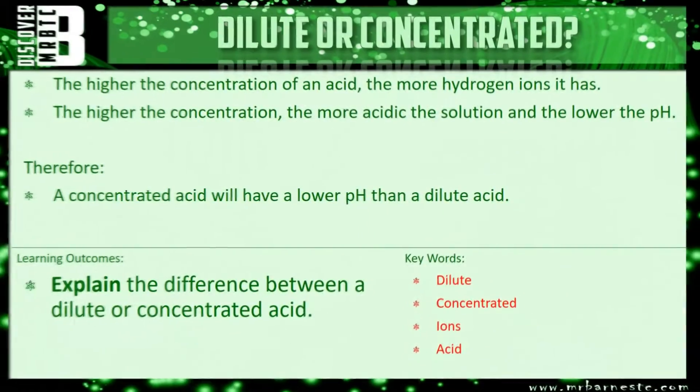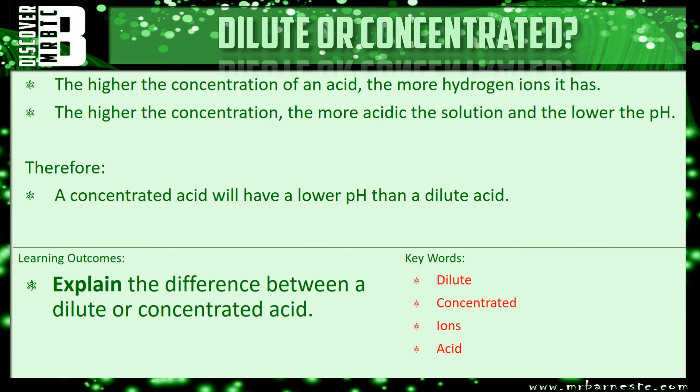So in summary, the higher the concentration of an acid, the more hydrogen ions it has. The higher the concentration, the more acidic it is and the lower the pH. Therefore, a concentrated acid will have a lower pH than a dilute acid.